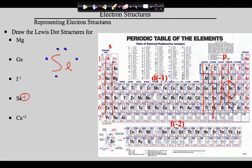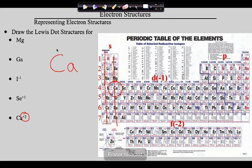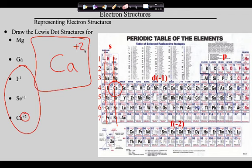Finally, calcium. Calcium is in the 4s sublevel, group two, so it has two dots — paired because they're in the S sublevel. To give calcium a plus two charge, since it only has two valence electrons, we take both away. So we draw calcium without any valence electrons. Importantly, when doing ions we do not include the charge symbol in the Lewis dot structure — that would be incorrect.